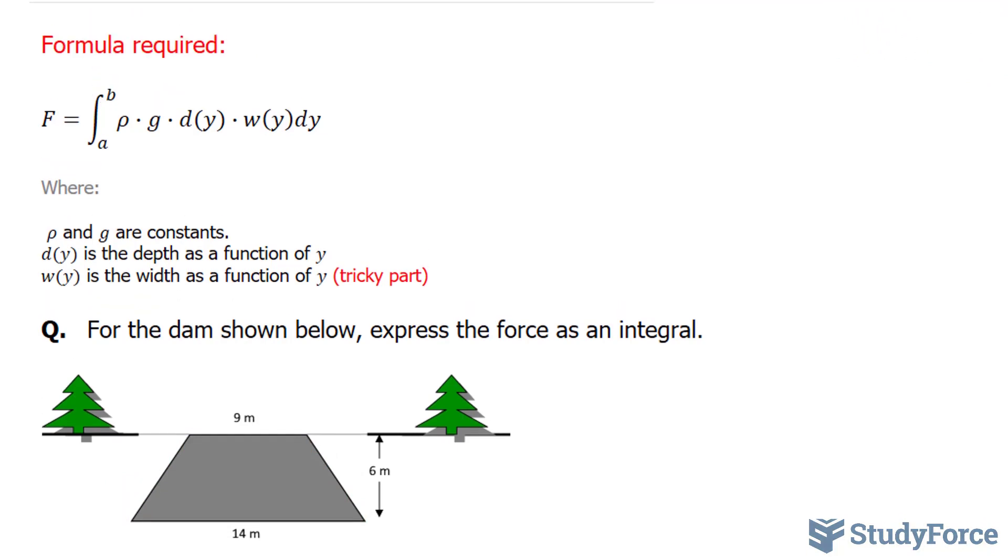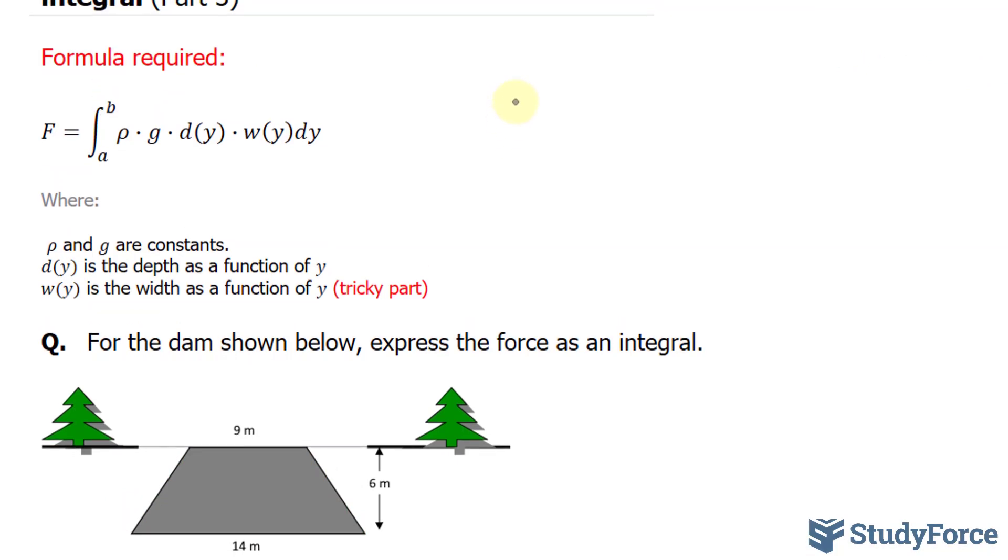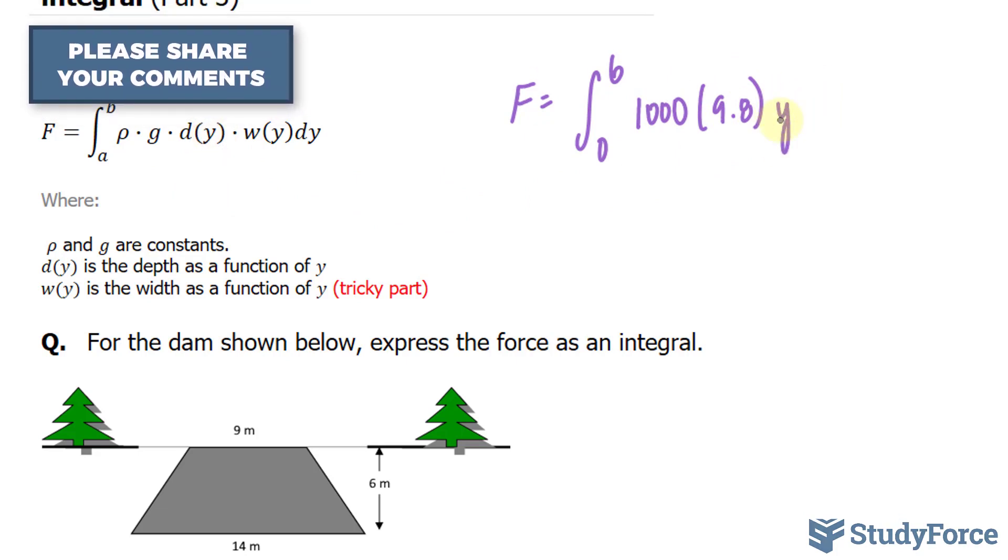Let's start by inputting the values that we know. Force is equal to the integral between a and b. That's the range, so from 0 to 6 along the y-axis. Rho is 1,000, g is 9.8, dy is simply y, because we're using rectangles.